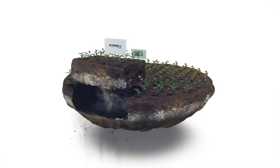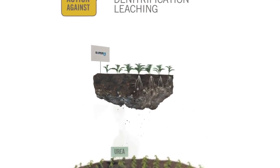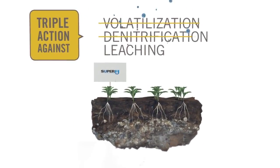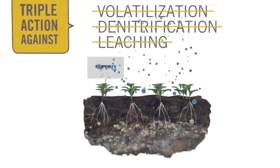Super U fertilizer is powered by the triple action performance of Agritane Plus nitrogen stabilizer for greater protection against all three forms of loss.